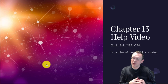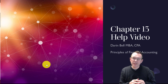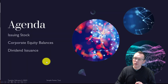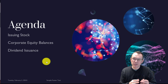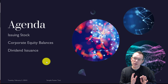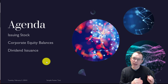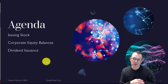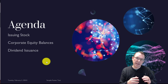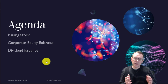Hello, my name is Darren Bell. I'm here to walk you through the Chapter 13 help video for principles of financial accounting. Chapter 13 is about corporate accounting. We're going to walk you through a few issues: issuing stock as a corporation — what does that look like and what accounts does it impact — corporate equity balances, and finally an exercise on the issuance of dividends with common stock and preferred stock, including cumulative versus non-cumulative preferred stock. So let's get going.